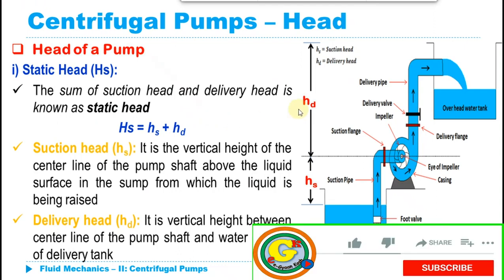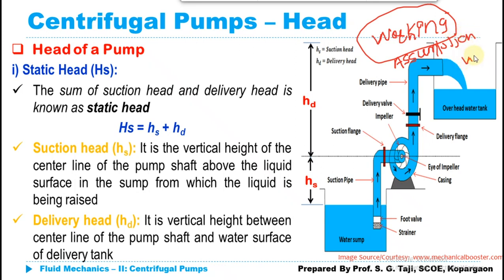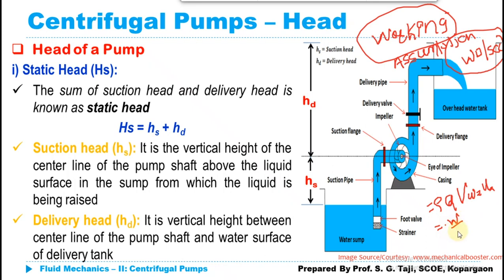Starting from the first static head, just before proceeding, let me recap what we have discussed in the previous lectures. First, we discussed the working of the centrifugal pump, then the priming operation — how it is generally done and why it is required. After that, we discussed various assumptions and basic concepts used in the centrifugal pump. And in the last lecture we discussed work done per second by the centrifugal pump, given by Rho Q multiplied by VW2 multiplied by U2, which can also be written as W equals Rho QG divided by G, multiplied by VW2 multiplied by U2.